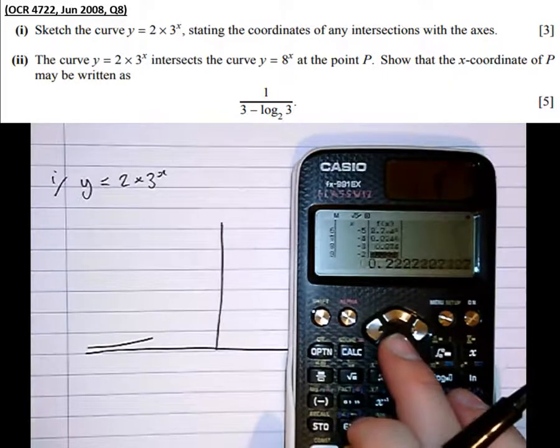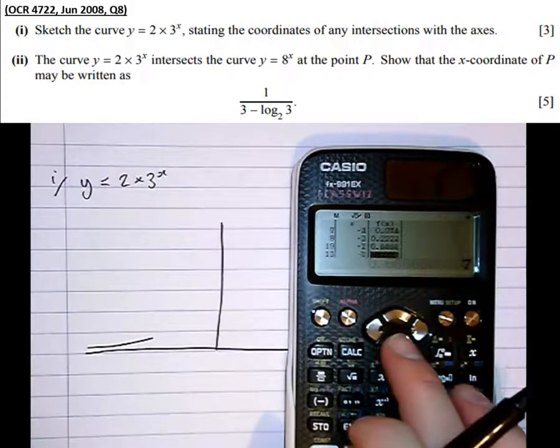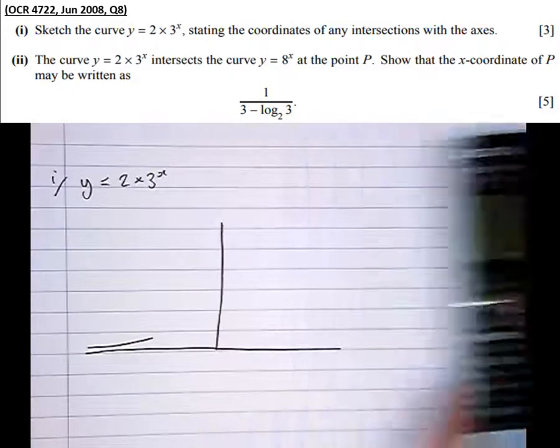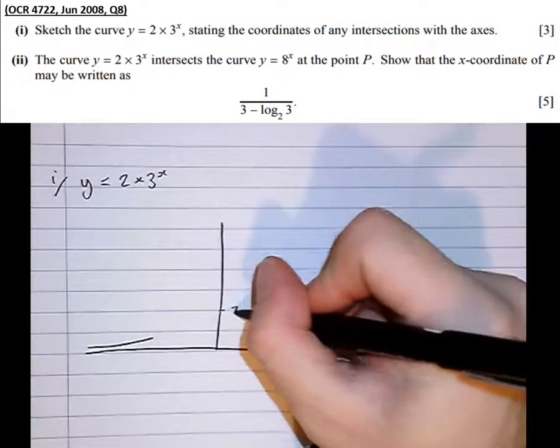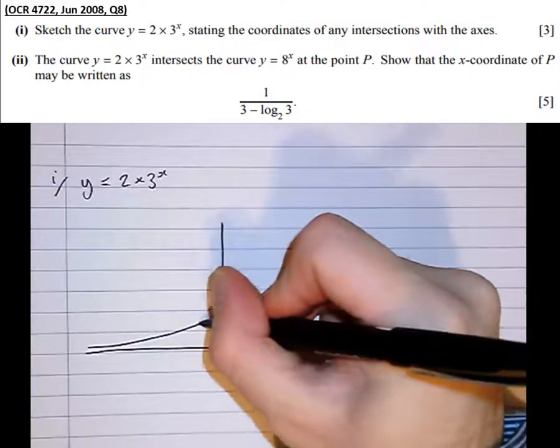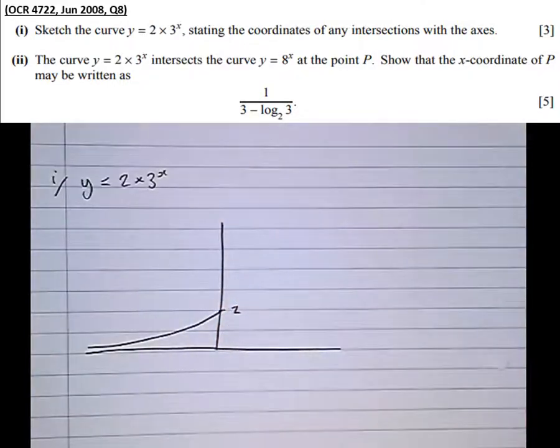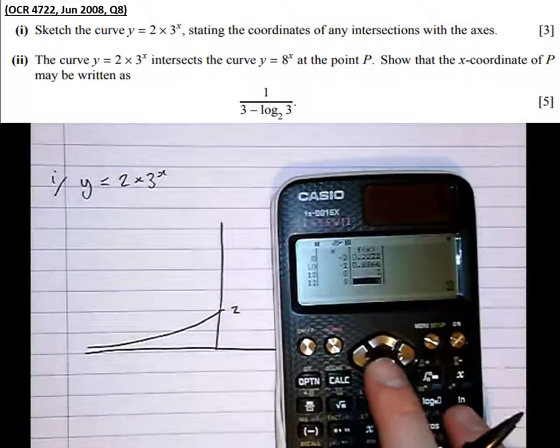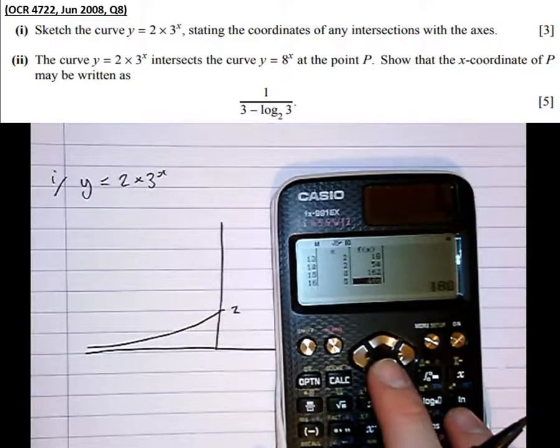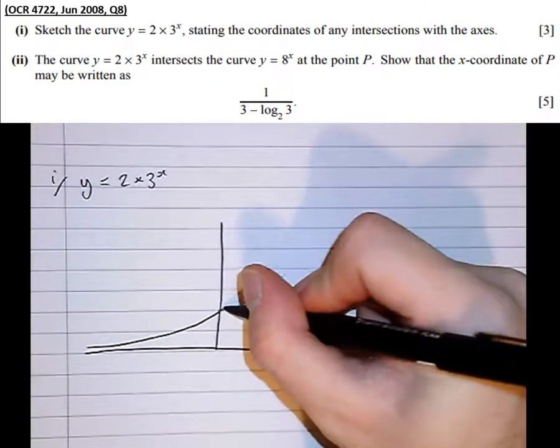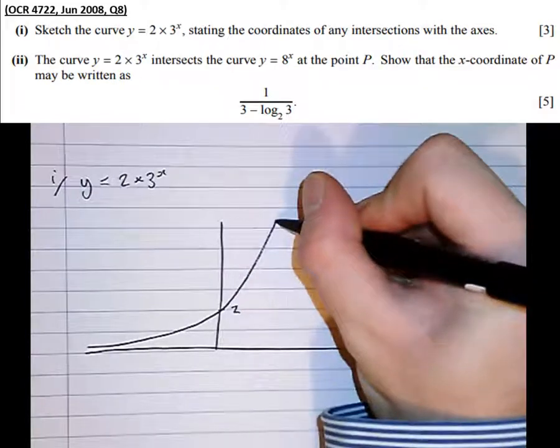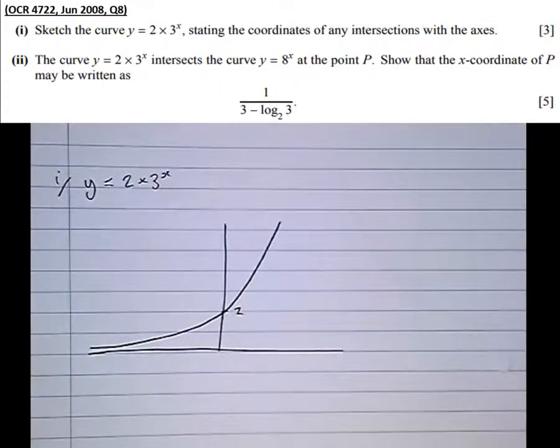They keep being small till I get to x equals 0, at which point the y coordinate is 2. Then it starts getting very big very quickly. The increasing gradient accelerates. So that's the shape of the exponential curve, y equals 2 times 3 to the x. Again, that's just a curve to learn.